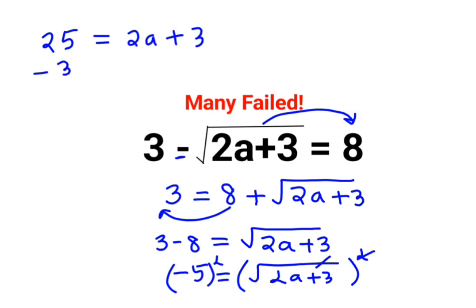So we have 2a plus 3. Subtracting both sides by 3, we have 22 equals to 2a. Now we can say 11.